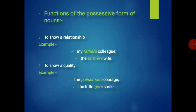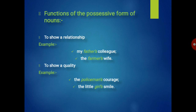Now the next topic is the functions of the possessive form of nouns. We use the possessive form of nouns to show a relationship — for example, my father's colleague, the farmer's pipe. We also use it to show a quality — for example, the policeman's courage, the little girl's smile. Here, the possessive form shows the quality: courage is the quality of the policeman, and smile is the quality of the girl.